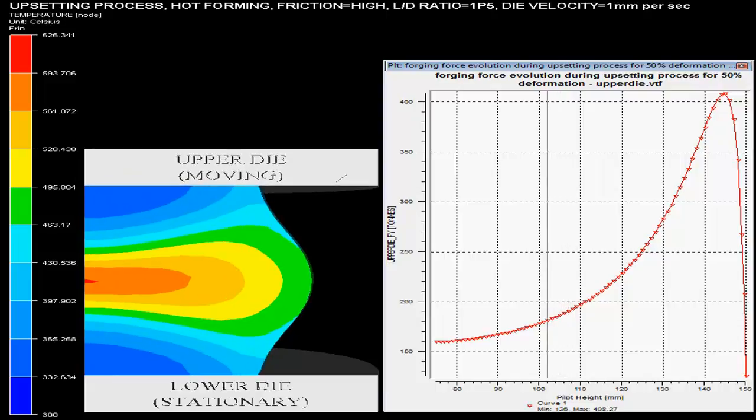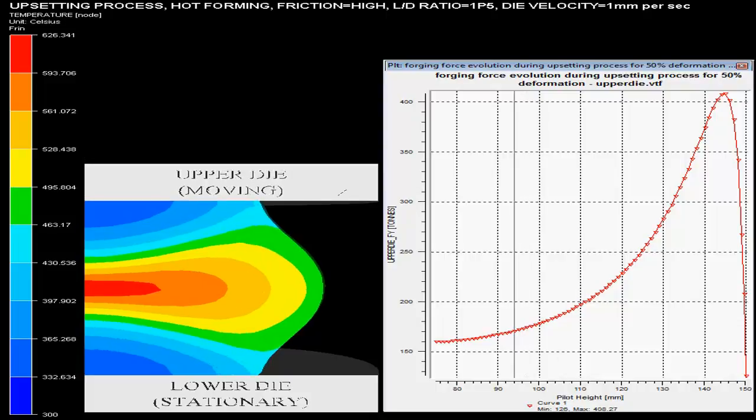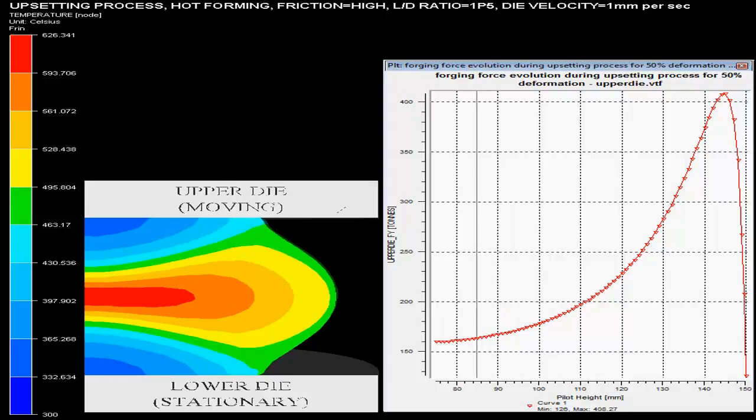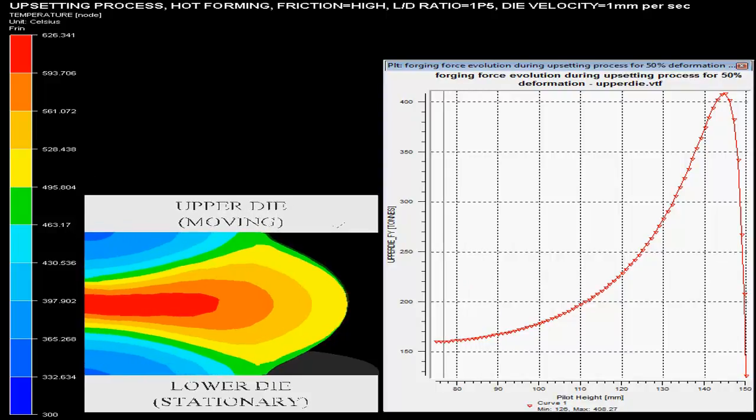The initial temperature of billet is 300 degree Celsius. The change in temperature is depicted by the color code shown on the left hand side of the video, and the final temperature of the billet is 593.706 degree Celsius.